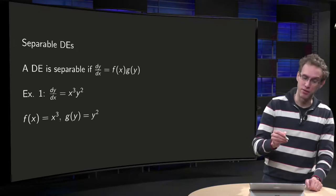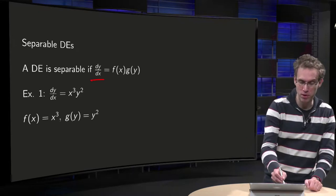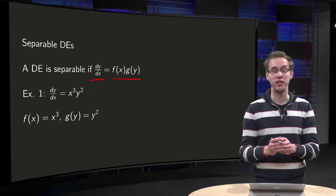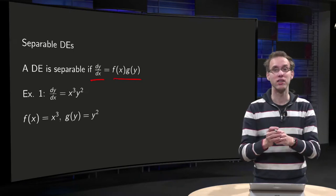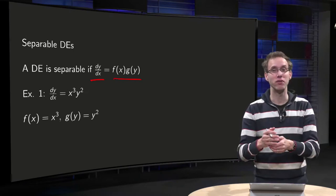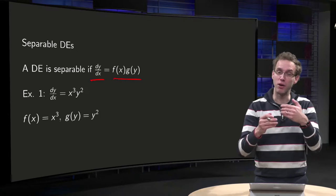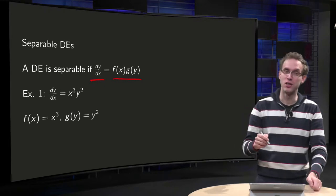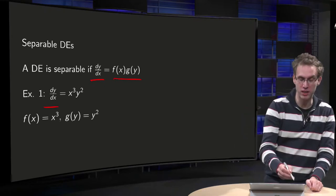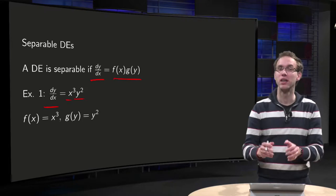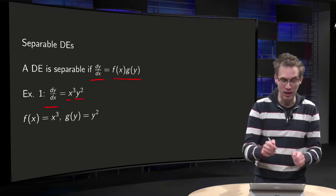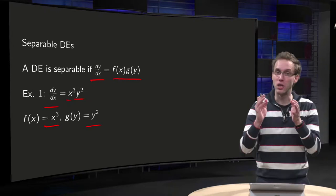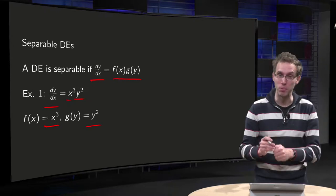A differential equation is separable if dy/dx equals a product of f(x) times g(y). So on the right-hand side you don't have just any function of x and y — you have to be able to rewrite it as f times g. For example, dy/dx equals x cubed times y squared can be rewritten as a product f(x) = x³ times g(y) = y². That is what we call a separable differential equation.